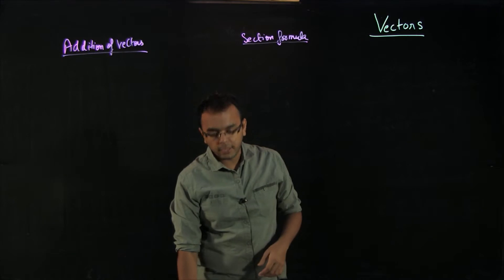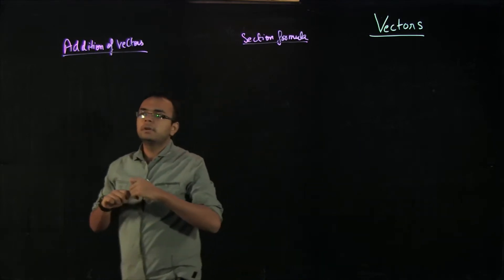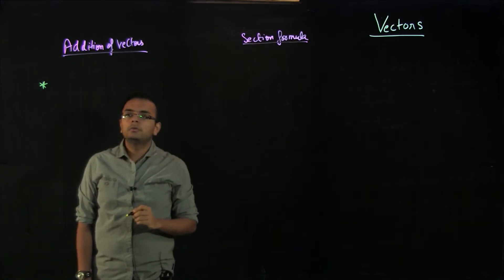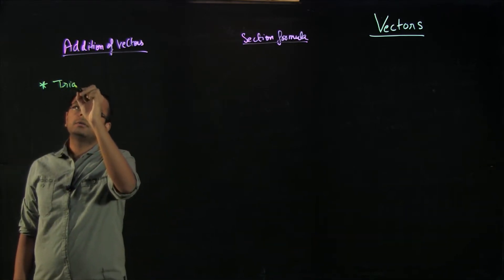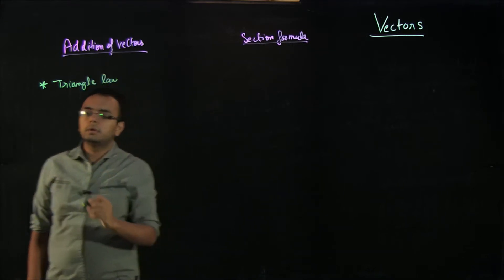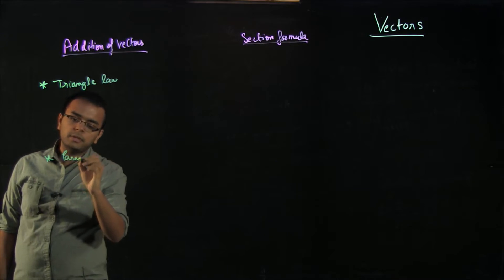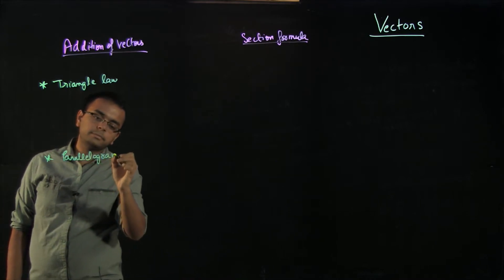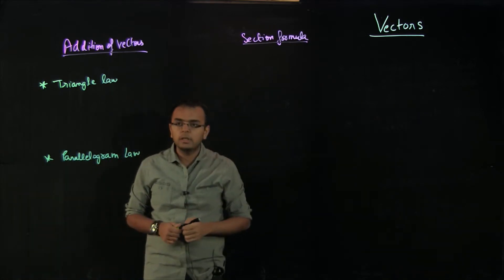Let us start directly into the addition of vectors. Addition of vectors is defined by two laws: the first is called the triangle law and the second is called the parallelogram law. Basically both of them are essentially the same thing, but I just want to cover them in case you hear about them.